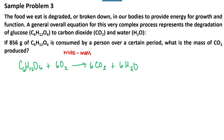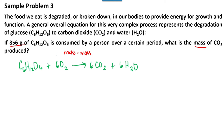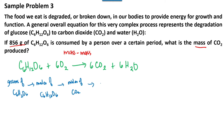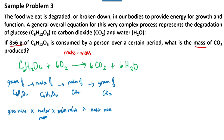So our given is mass, and our target is also mass — that is a mass-to-mass stoichiometry problem. To solve this, we start with the given grams of glucose, convert to moles of glucose, then use the mole ratio to get moles of carbon dioxide, and finally multiply by the molar mass to get grams of carbon dioxide. The first molar mass used is for glucose, and the second is for carbon dioxide.